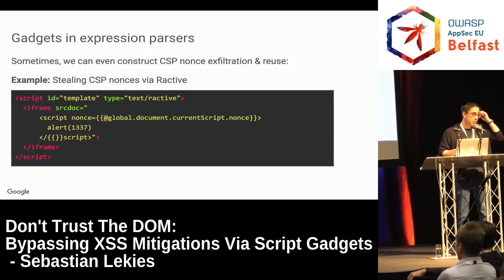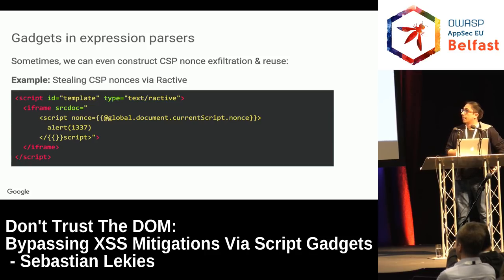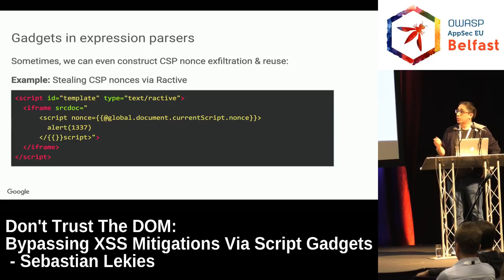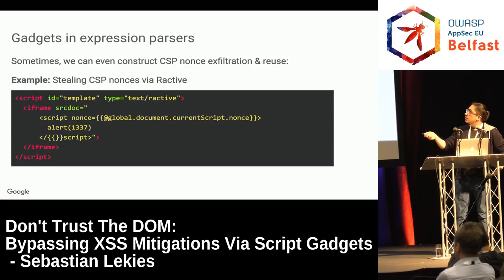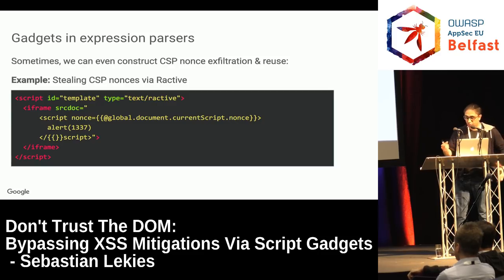We can also steal nonces using reactive framework expression languages. By reading the nonce property of a legitimate script element in the application and then creating a new script with the correct nonce value, you can bypass nonce-based CSP. This builds on prior research by Sebastian and Eduardo who found ways of stealing nonces using browser quirks, which are slowly being addressed by browsers.